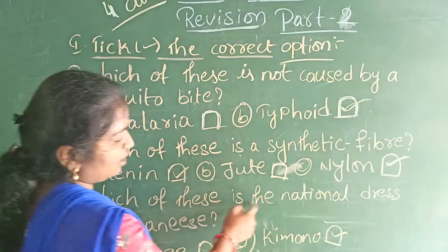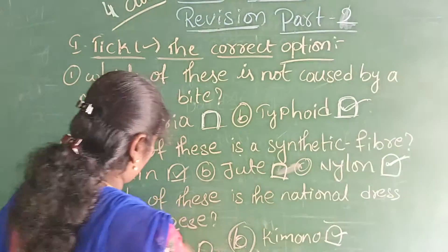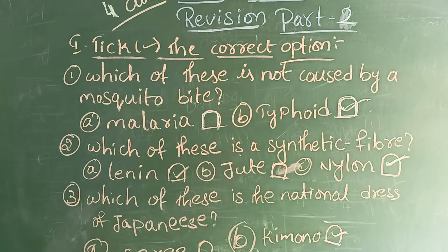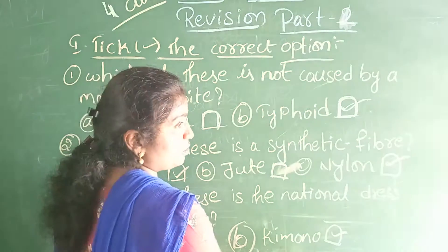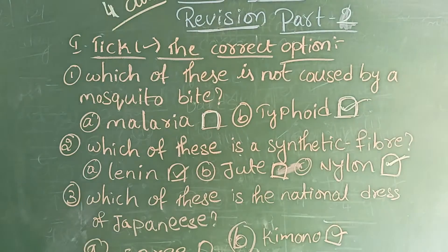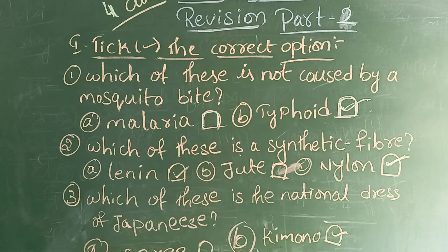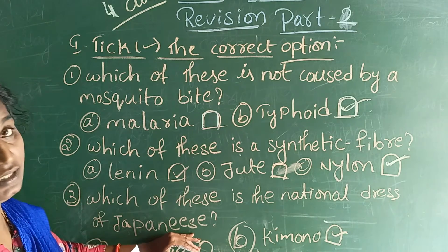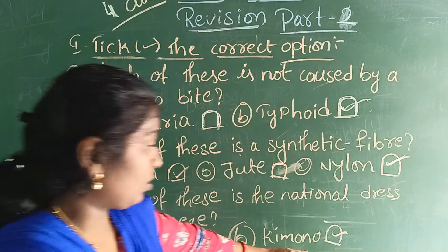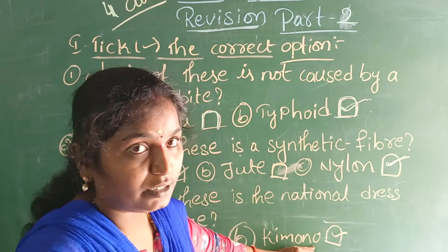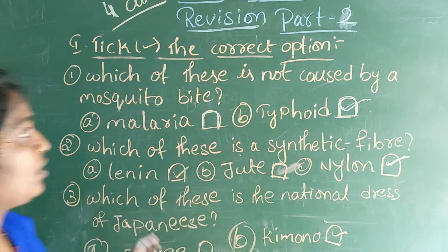Which of these is the national dress of Japanese? The national dress of Japanese — Indian women wear saree as their national dress. But we are asking for Japanese. The dress worn by Japanese is called Kimono.